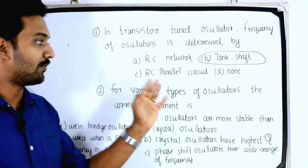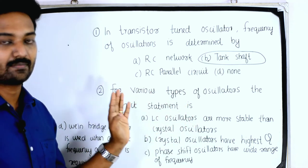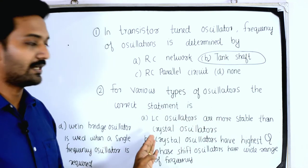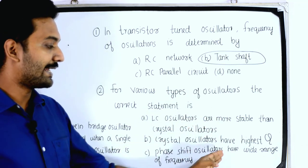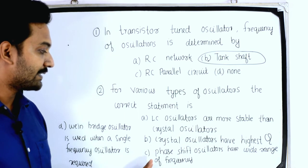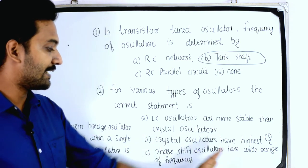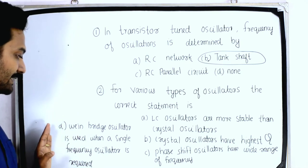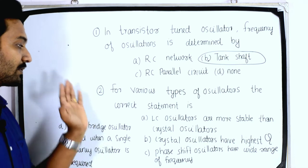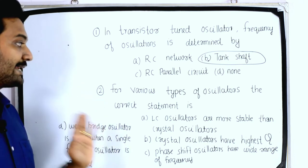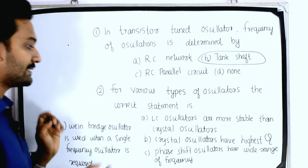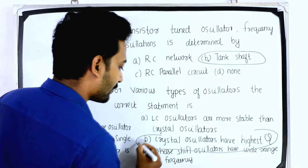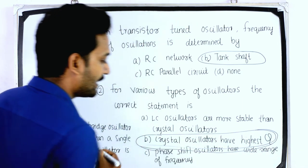Next question: for various types of oscillators, the correct statement is — option A: LC oscillators are more stable than crystal oscillators; option B: crystal oscillators have the highest Q; option C: phase shift oscillators have a wide range of frequency; option D: Wien bridge oscillator is used when a single frequency is required. The correct answer is option B: crystal oscillators have the highest Q.